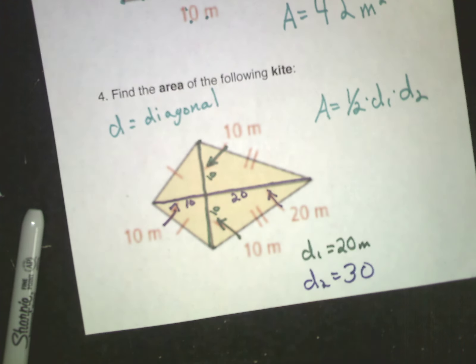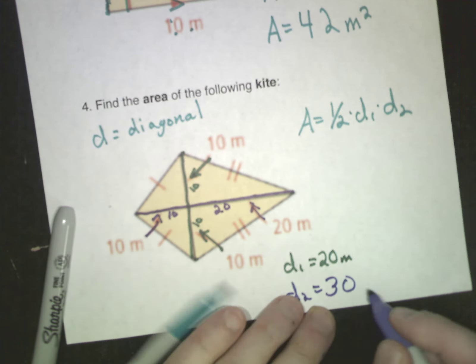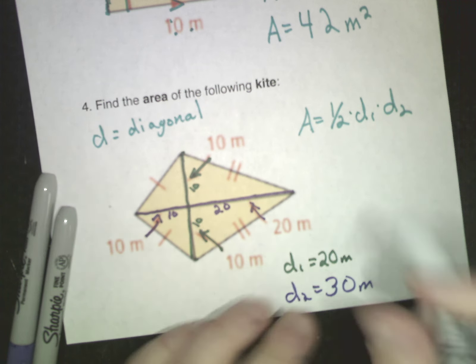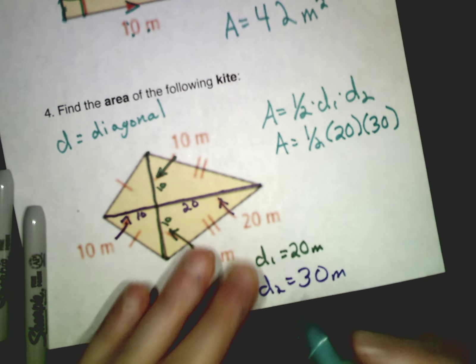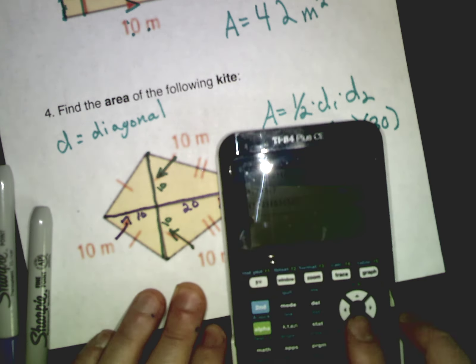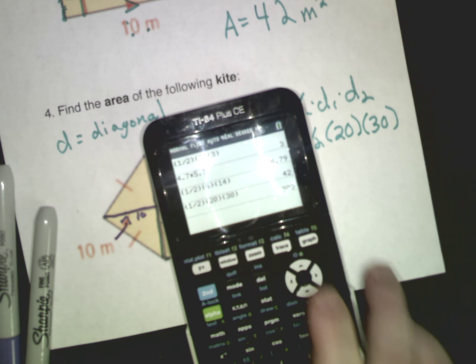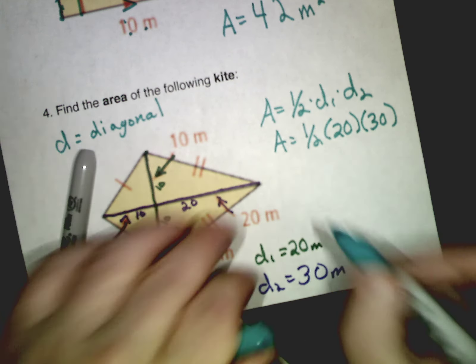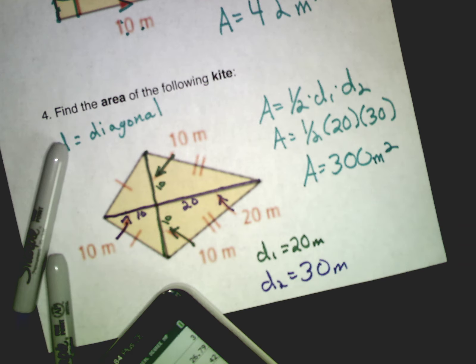But, once you get that, this is all you have to do now. I should have put meters here to be correct. Okay. Now, this is what you have to do. Area equals one-half, 20 for D1, and 30 for D2. Now, if you know 20 times 30 is 600, and half of that is 300, but for those of us who don't, let's just do it this way. Okay. So, again, divided by one-half, one divided by two, 20, 30. Hit enter. The answer is 300. So, our answer, final answer, is 300 meters squared. All right.